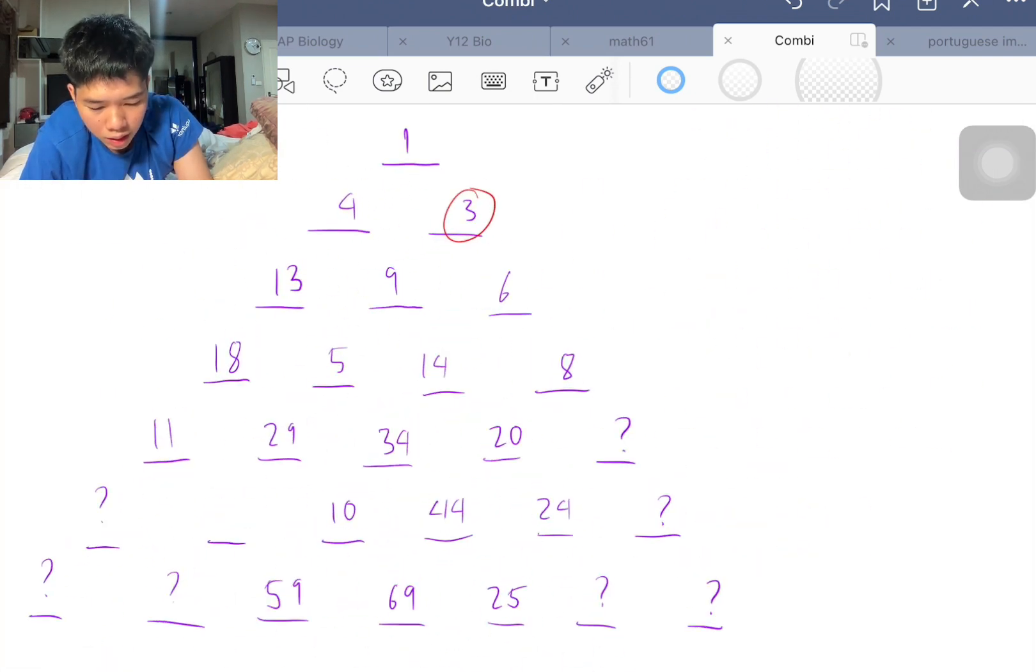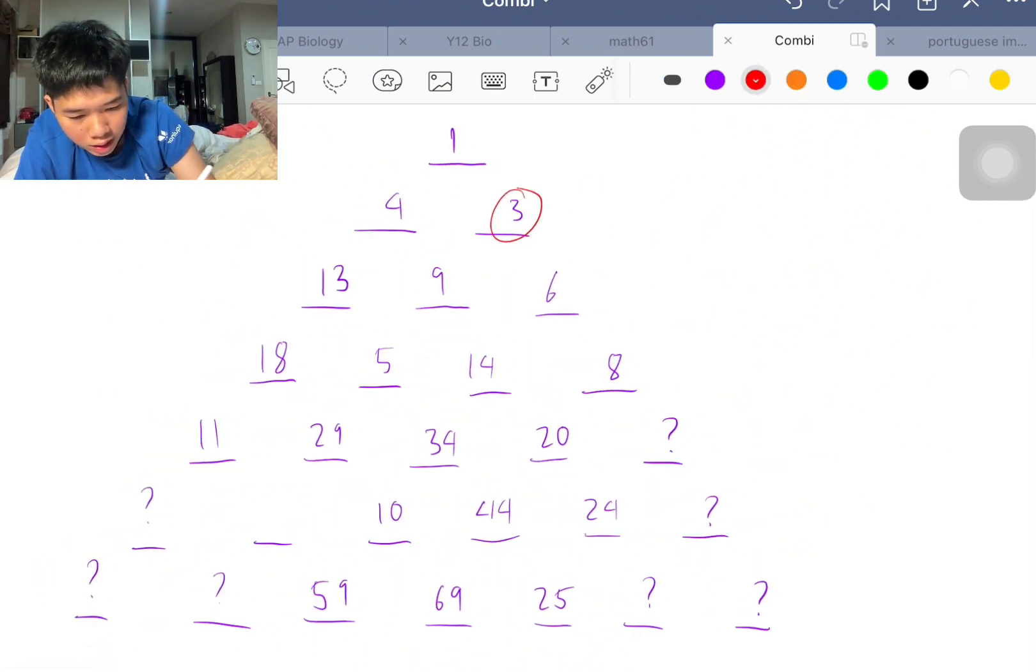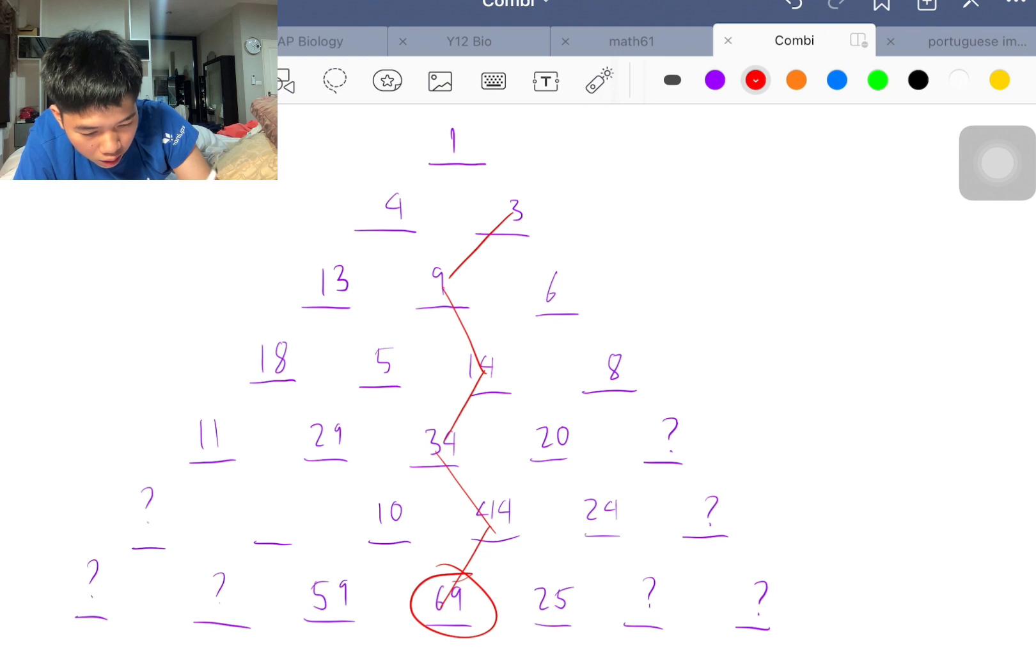What I mean by this is that you can create chains of numbers like this. Say you start here. 3 goes to 9, which is the larger number below it, goes to 14, goes to 34, goes to 44, goes to 69. And the bottom number here is actually the sum of all of these numbers.